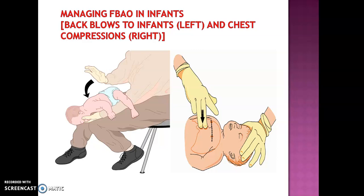For infants, similar to the CPR technique explained earlier, use two fingers to press on the sternum region just above the xiphoid process. Keep one hand supporting the head and push with two fingers. Another method is to hold the infant with both hands, supporting the back, and apply back compressions — repeat one, two — as shown, applying back blows for the infant.